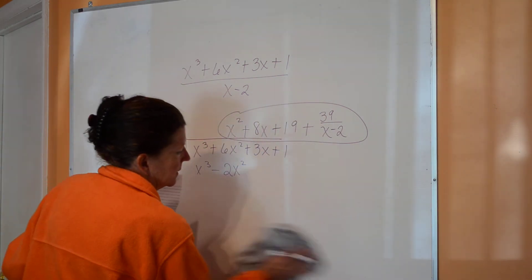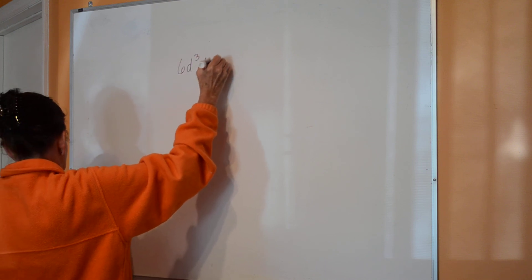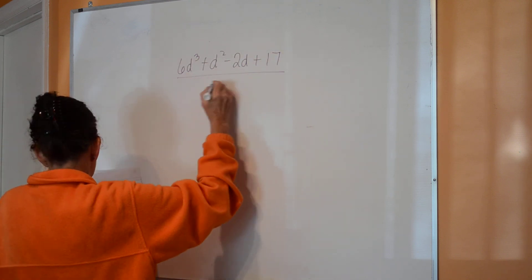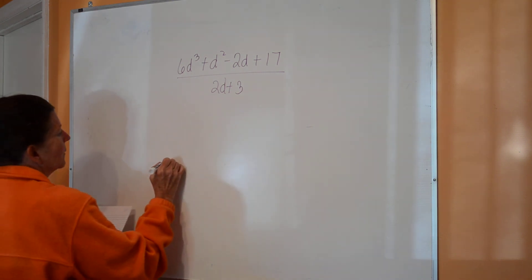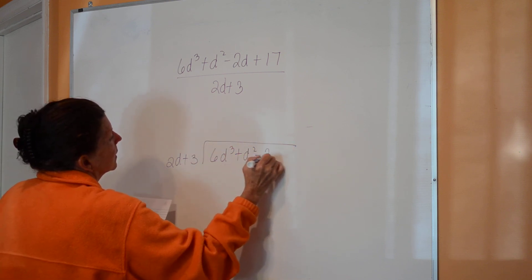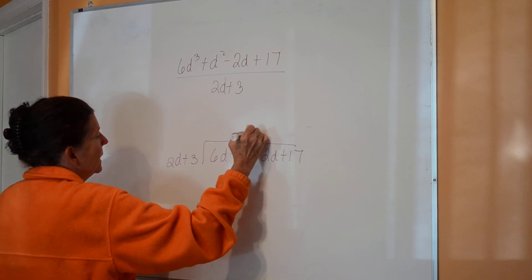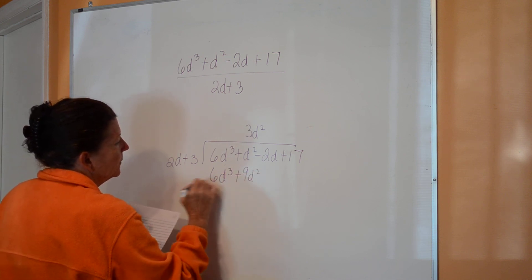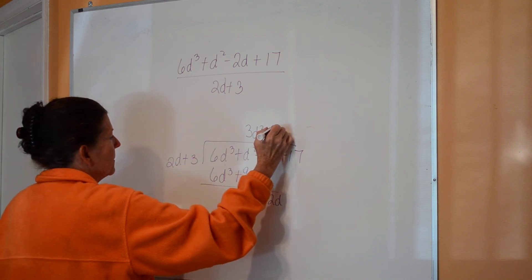You try one. Remember if the exponents don't step down in order you need a placeholder, but this one does. Divide it out and come back. We start: 2D times 3D² gives 6D³. Multiply (2D+3)(3D²) to get 6D³+9D². Subtract to get −8D²; bring down −2D. Next multiply by −4D...